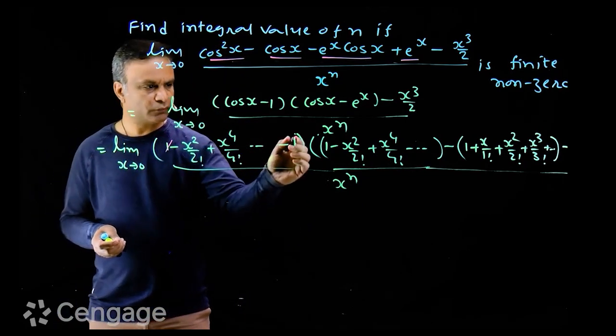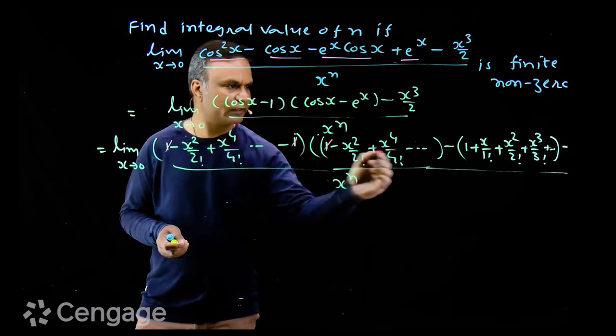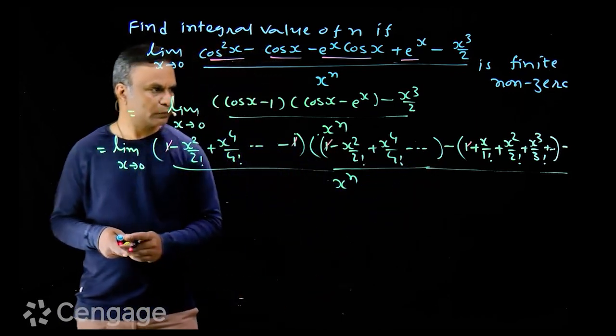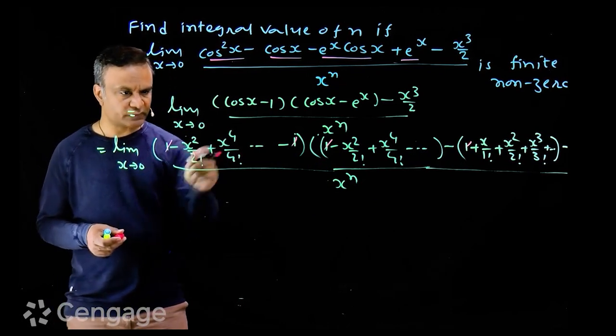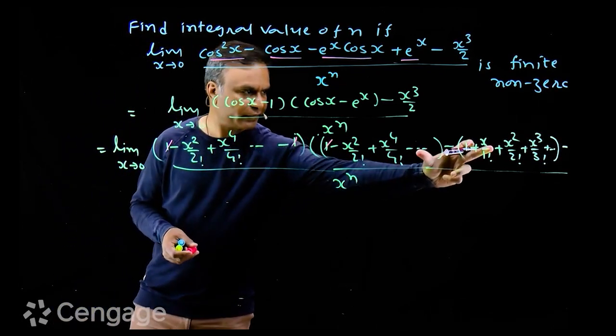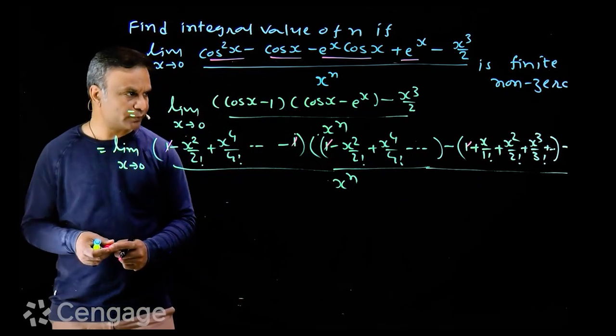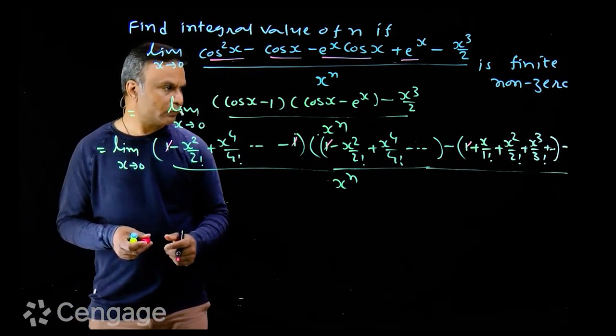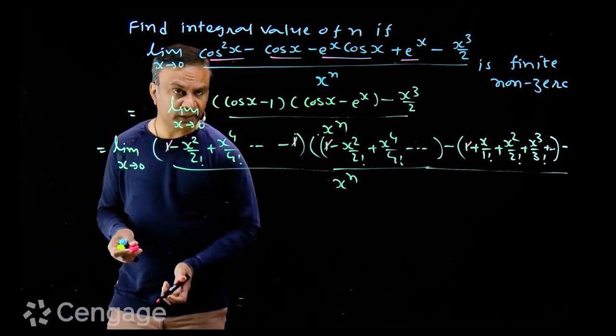In first bracket we can cancel out 1, from second bracket also we can cancel out 1. Now from first bracket we can take out x square common and from second bracket we can take out x common and then we cancel out x cube from numerator and denominator.